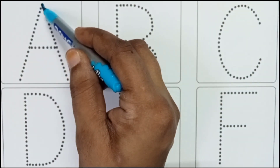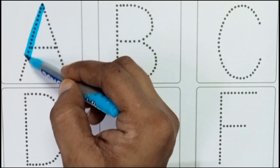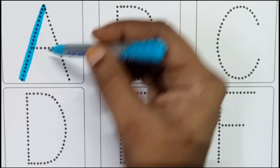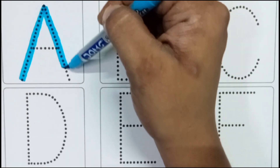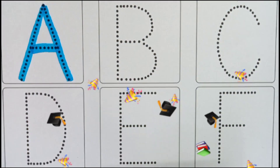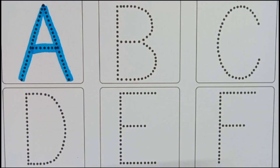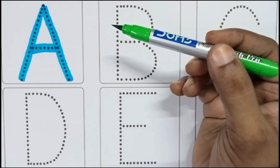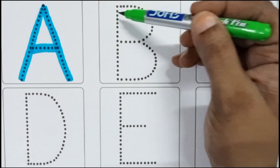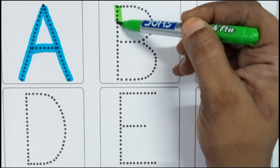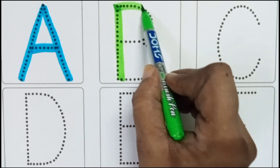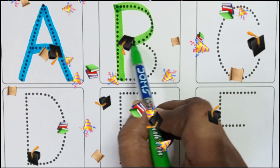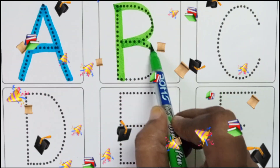Blue color. A, A for apple — apple means C. Green color. B, B for bat — bat means Bala.